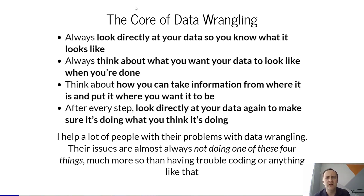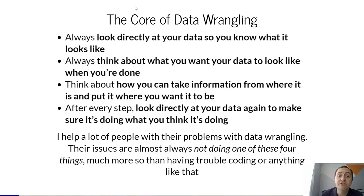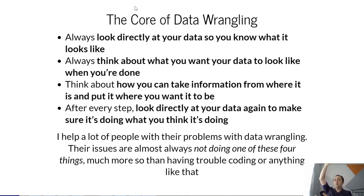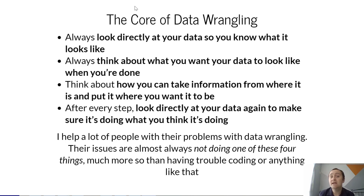For example, if you're working with sales data, do you want one row per product per year, one row per product per month, or one row per product? Once we know what the data looks like now and what we want it to look like, the real question is: how can we take information from where it is and put it where we want it to be? Maybe we have data by product by year, and we want to squash it down to a single value per product row. Or maybe we have one column per year and want to turn that into a single value.